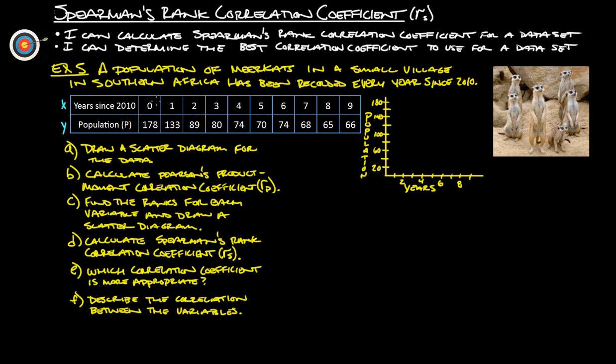So now we're going to simply graph these points. So at year 0, we were at 178. So that's about right there, right? And then let's graph the rest of these. So here's what we ended up with. So it definitely looks like there's a trend here and it's not linear.